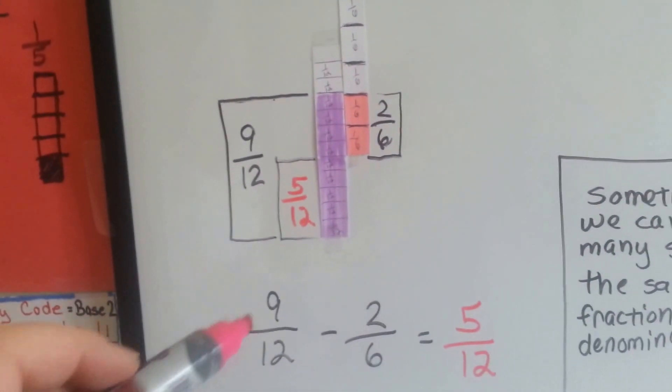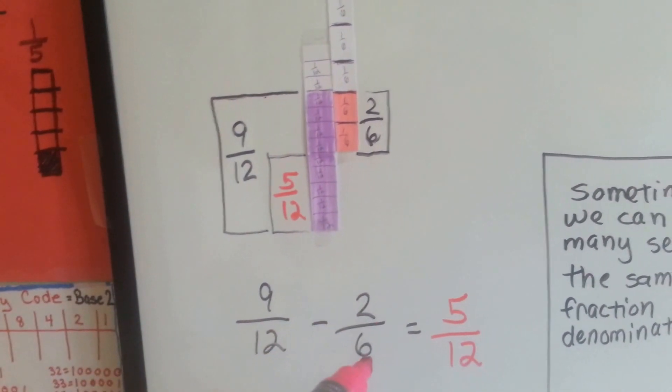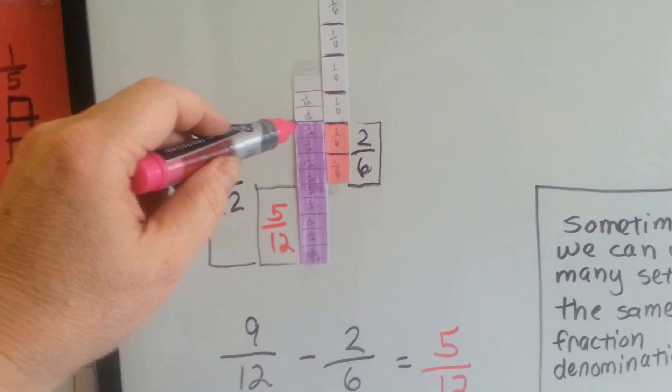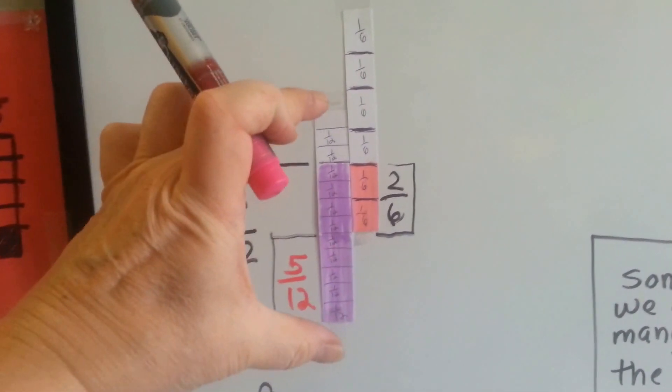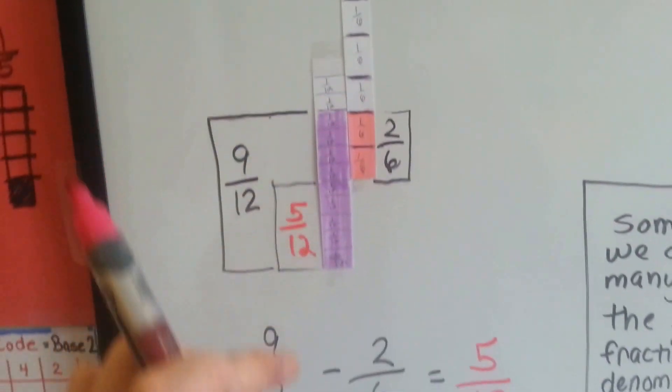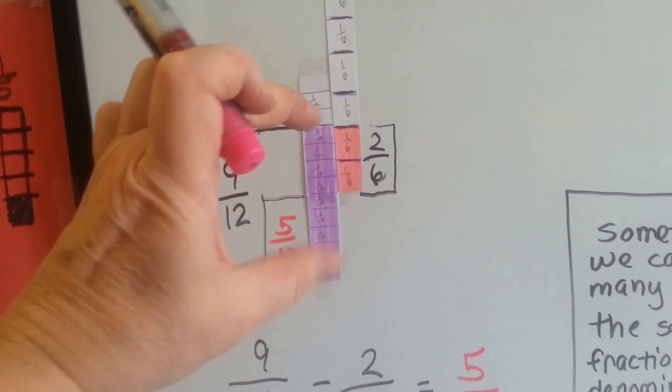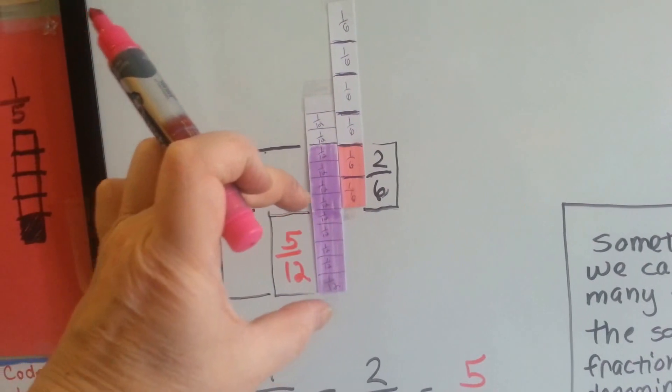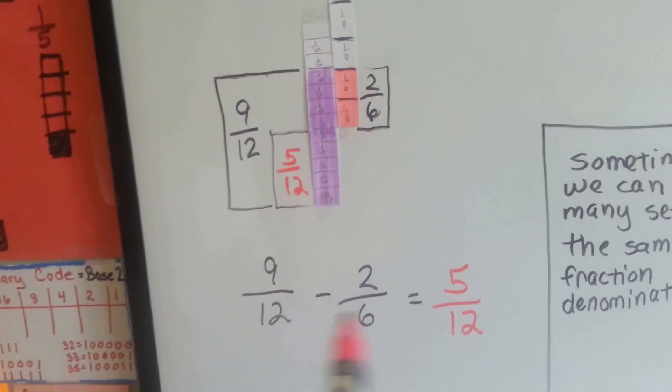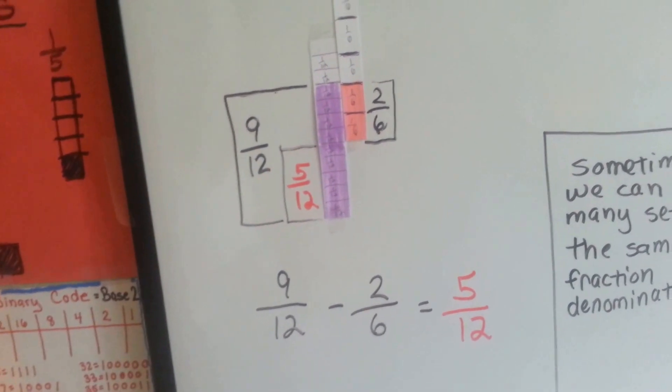In this one, we have 9 twelfths take away 2 sixths. We can see that it's 5 twelfths because here's our 9 twelfths. We have our twelfths bar, 9 are filled in, and we're going to take away 2 sixths. So we lined up 2 sixths next to it and we can see that it lines up perfectly with 5 twelfths. So we know that the answer, the difference, is 5 twelfths.